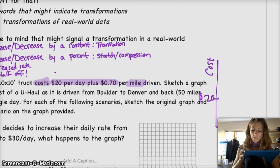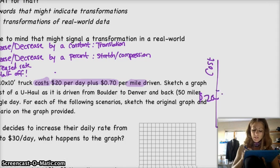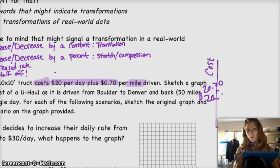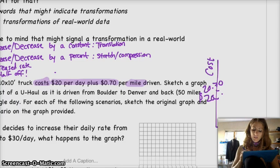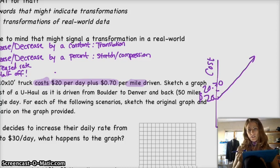So then after one mile, you have $20.70, and so on. Next would be $21.40, etc. So what ends up happening is you have this line that has a slope of $0.70 and a y-intercept of $20.